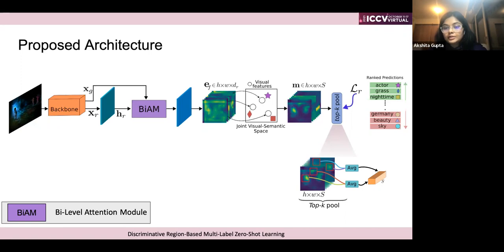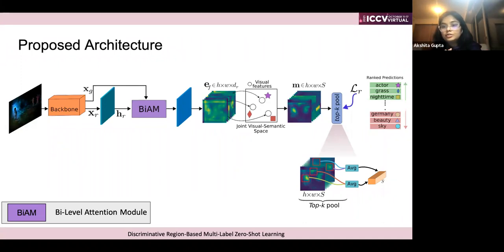For the top-k pooling procedure: from the response maps learned in the joint visual space, we select the top-10 class-specific features. Instead of combining all spatial response maps, our experimental results showed that taking the top-k out of those is better to get separation. Then ranking the learned prediction scores is a much better alternative compared to using all together.